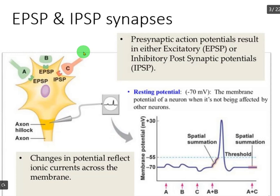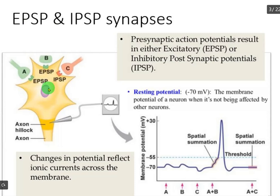In the previous lecture, we have seen some brain structures and their corresponding functions, and we also briefly discussed EPSP and IPSP. EPSP, also known as excitatory post-synaptic potentials, represents that the excitatory synapse causes the post-synaptic cell to become less negative. This is the pre-synaptic neuron, and this is the post-synaptic neuron. The membrane of this post-synaptic cell becomes less negative.